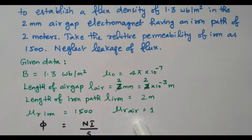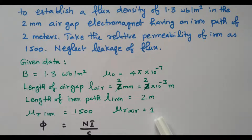Mu r of air is always 1. We need to find the magnetomotive force. First we will find it starting from the flux.